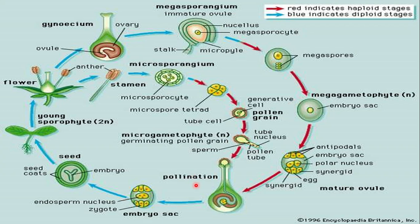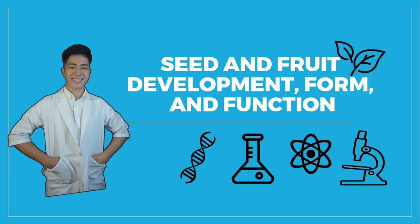And following that, what we call seed development and fruit development. So now let's start our discussion about the seed and fruit development, form, and function. After the double fertilization, each ovule develops into a seed, and the ovary develops into a fruit enclosing the seeds.